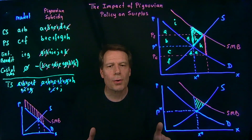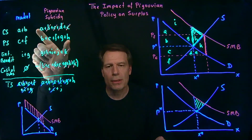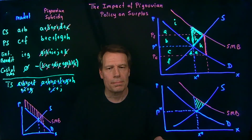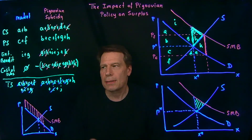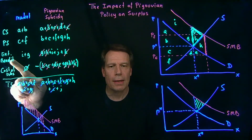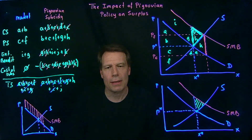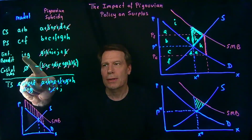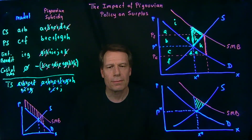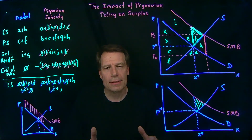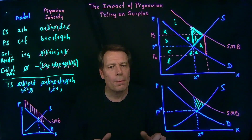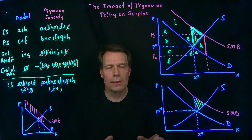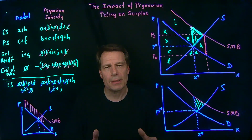You can go through the same steps for Pigouvian taxes and negative externalities. You'll get two columns again, but they won't have quite as many letters in them. The only thing to be careful about is that the externality benefit becomes an externality cost when there's a negative externality, so those terms will be negative. But other than that, the steps are the same, and you should get the same result: that when the Pigouvian tax is imposed with a negative externality, the deadweight loss gets eliminated.